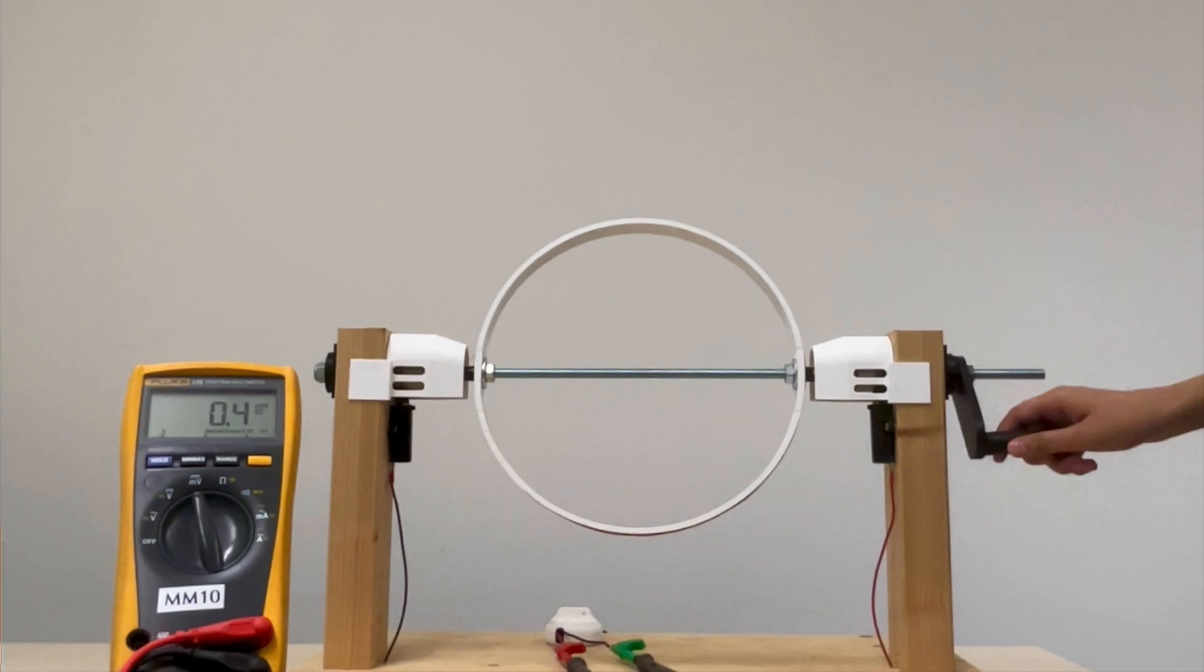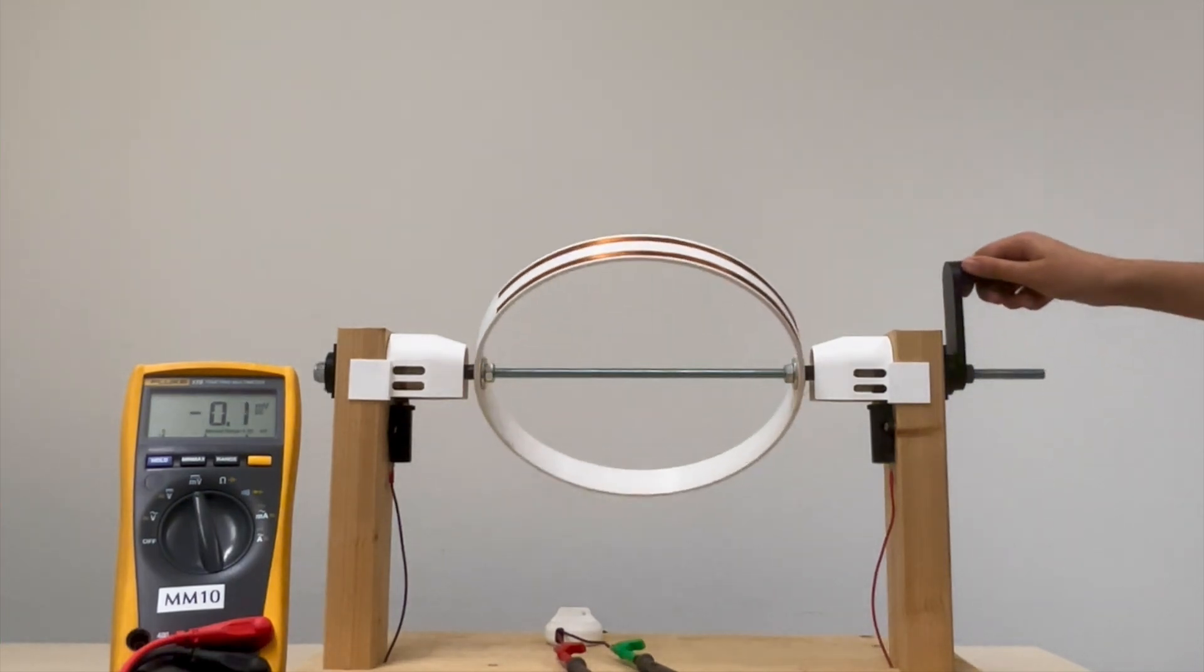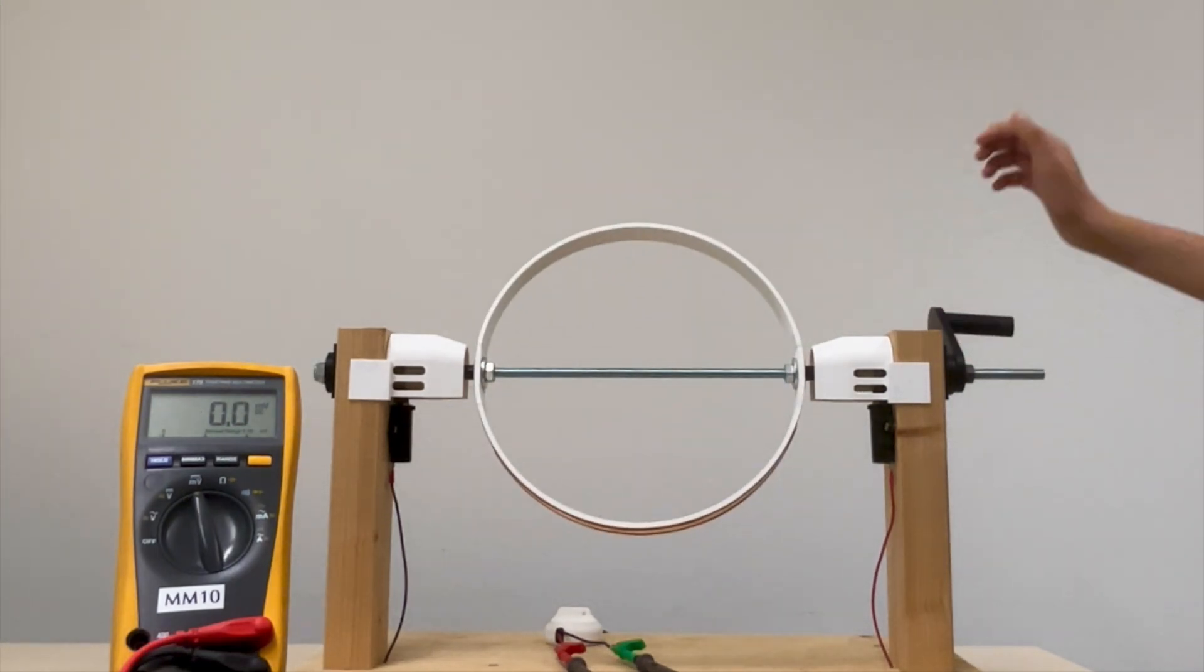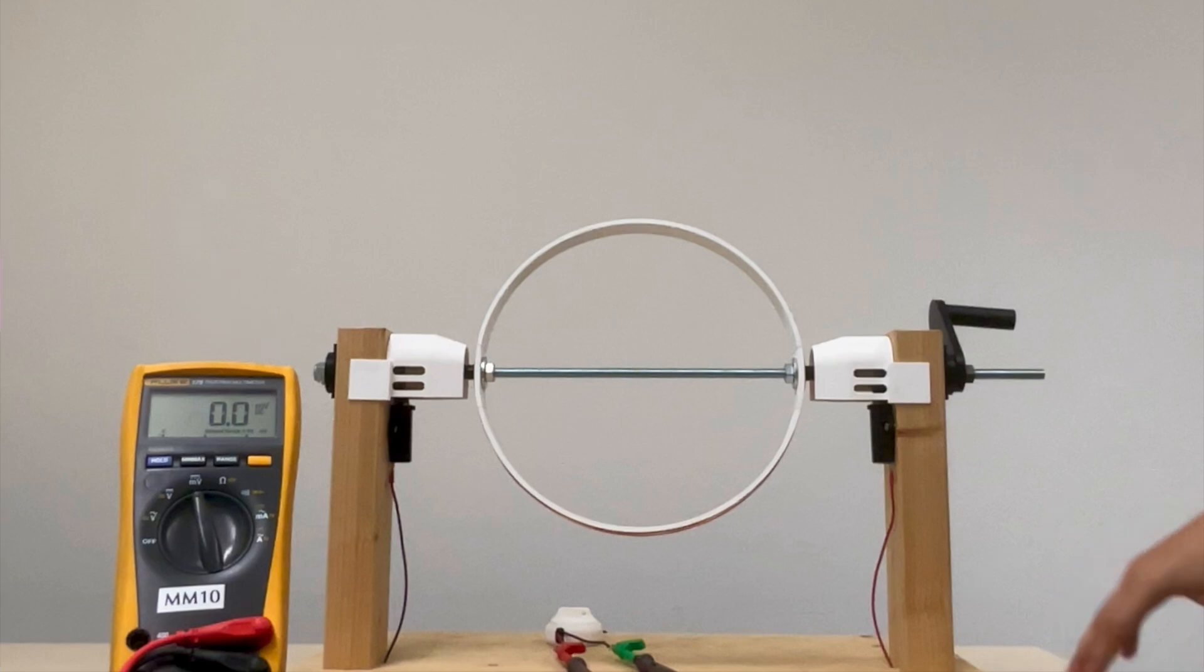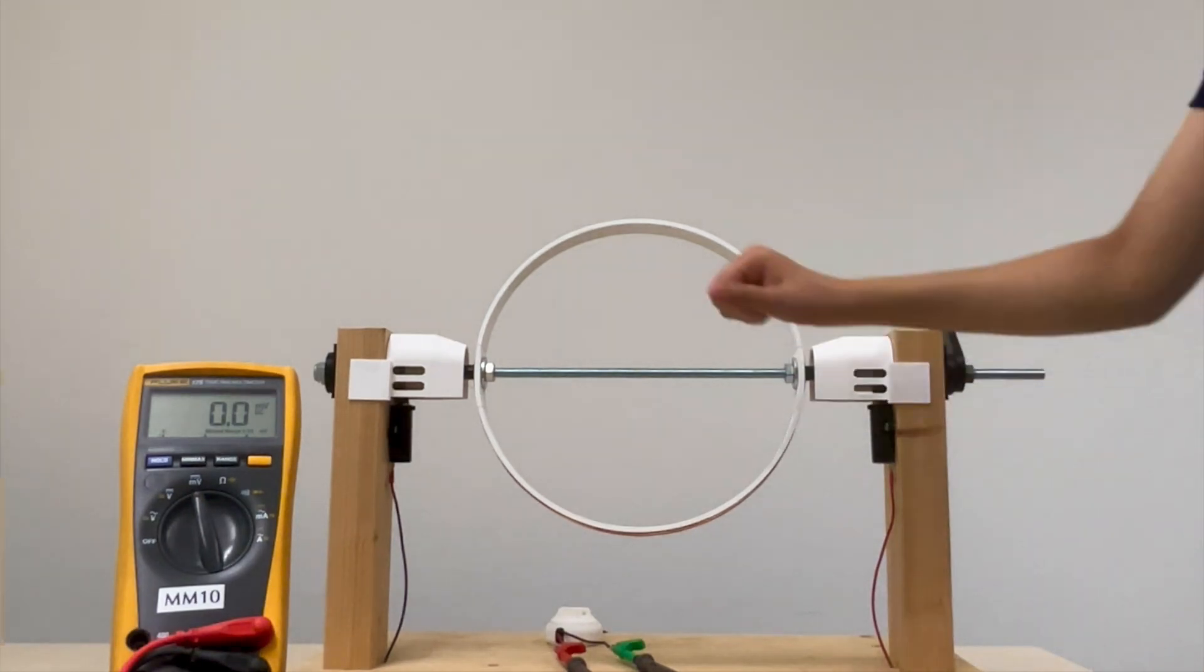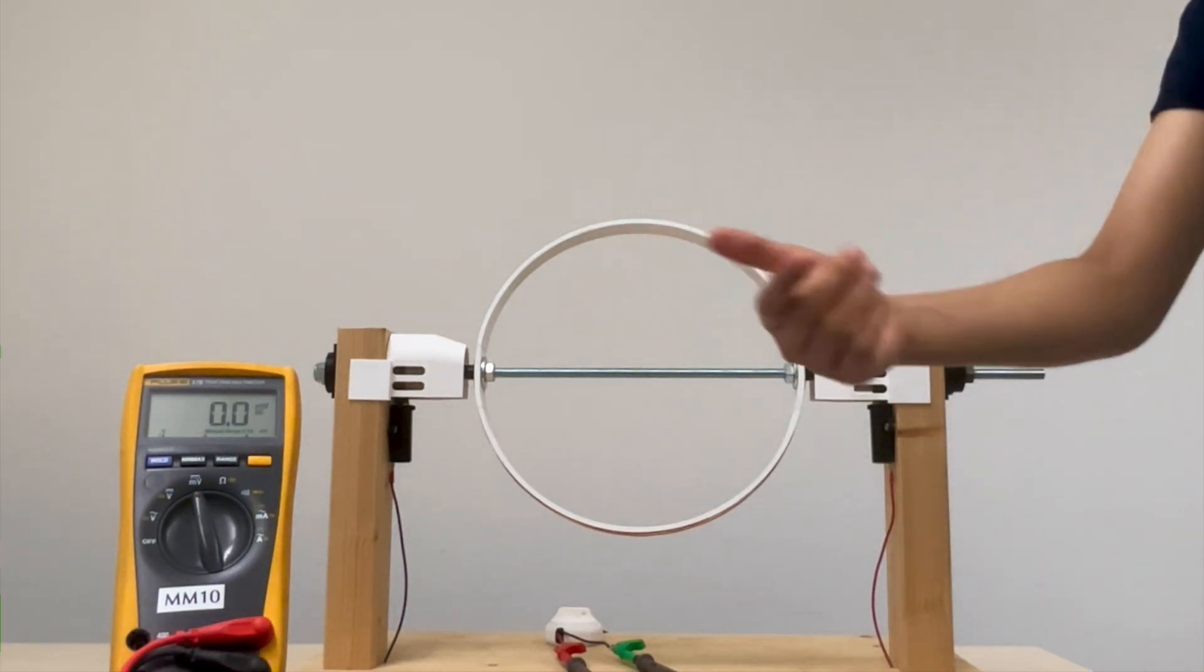So in this experiment, we would be using the Earth's magnetic field to generate electricity. The Earth's magnetic field is very weak. To put into perspective, a bar magnet is about a thousand times stronger than the Earth's magnetic field. We have set up our experiment so that it's aligned with the Earth's magnetic field, specifically pointing towards the magnetic north pole.